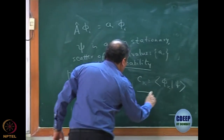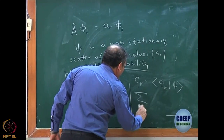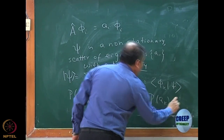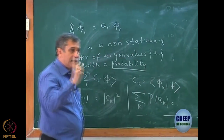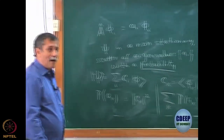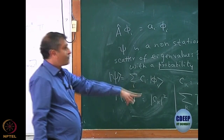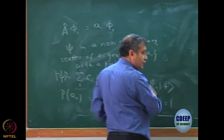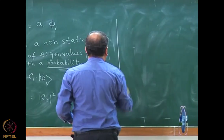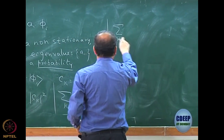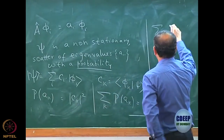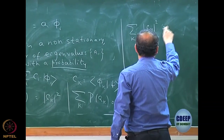|C_k|² = C_k* C_k is the probability of getting a particular eigenvalue A_k. And of course, the sum of this probability — if I sum over all A_k — the probability of A_k should be 1. That is understood: the total probability of getting each of the eigenvalues is 1. So Σ_k |C_k|² = 1. This is C_k* C_k summed over k equals 1.